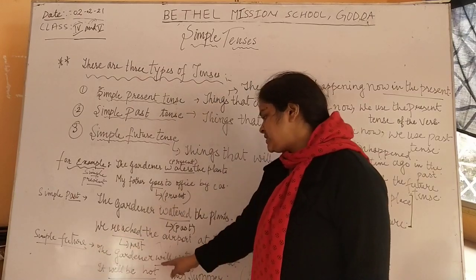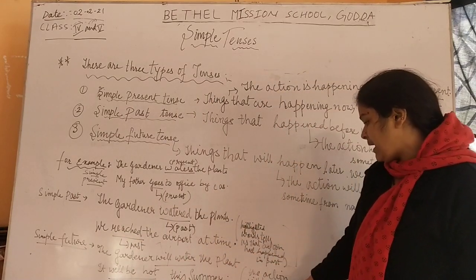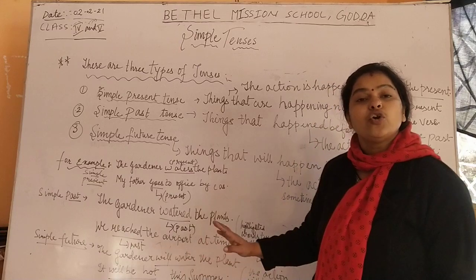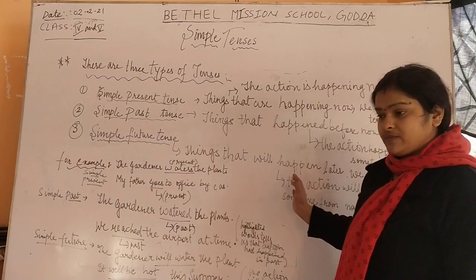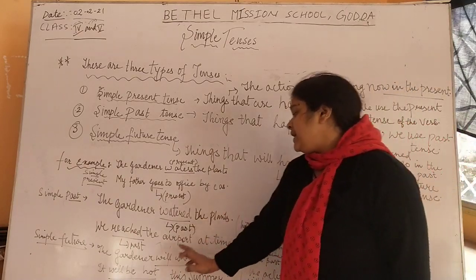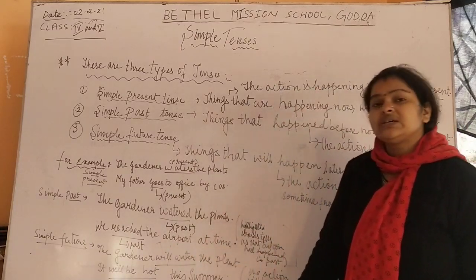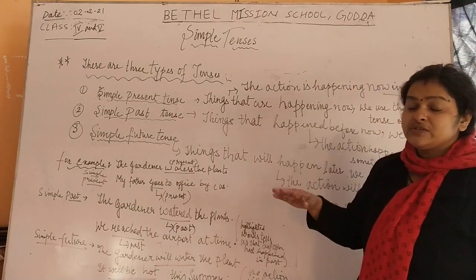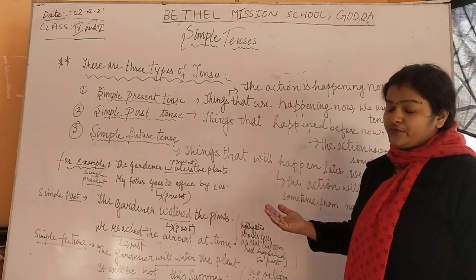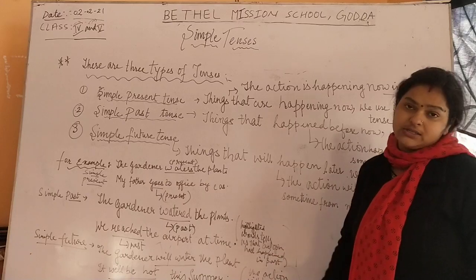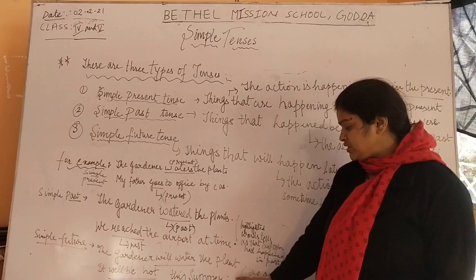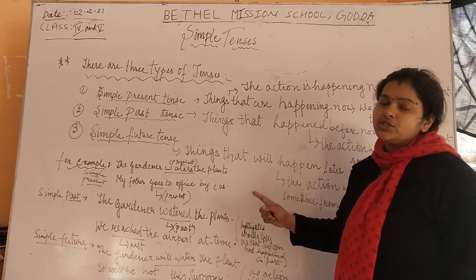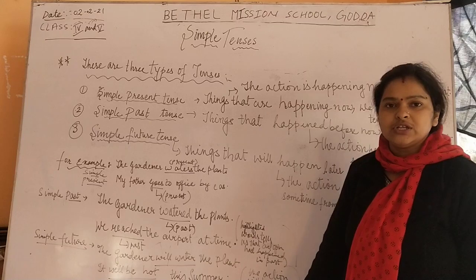Simple future tense: the gardener will water the plant sometime in the future. It will be hot this summer — this is an explanation of a time which will come in the near future, that the summer will be hot. These sentences and the highlighted words show the future tense used in the particular sentence.